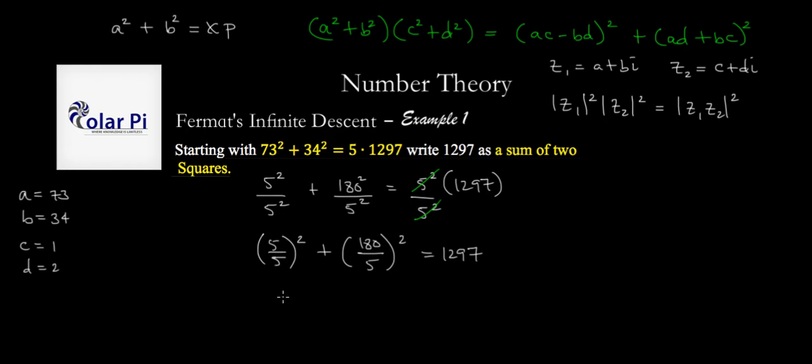And as soon as we simplify we're done. 5 divided by 5 is 1, so we've got 1 squared, and then plus 180 divided by 5 is 36, so 36 squared is equal to 1297. And there it is.